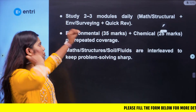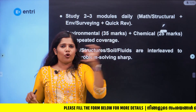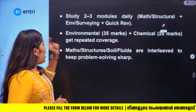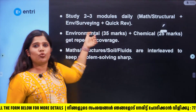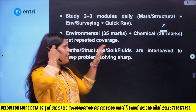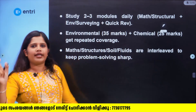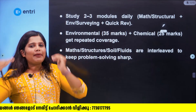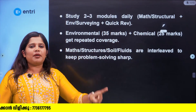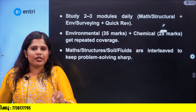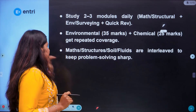We will include all modules in the revision: Module 1, 2, and 3, with a few selected topics. The exam distribution is: Environmental Engineering carries 35 marks, Chemical Engineering carries 25 marks, and Civil Engineering carries 35 marks. All different topics will be covered across our classes.